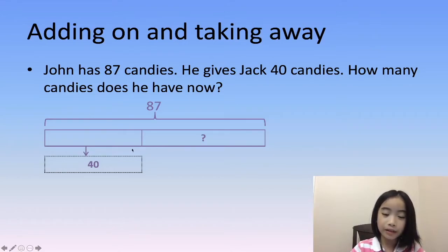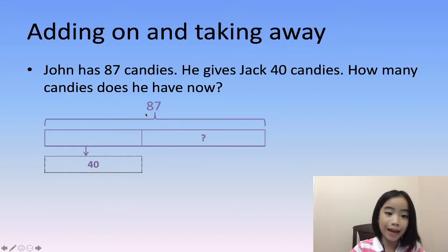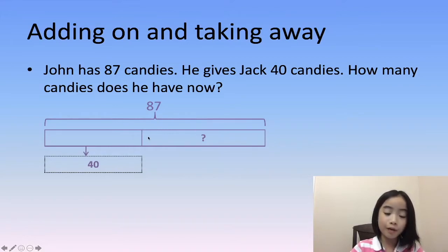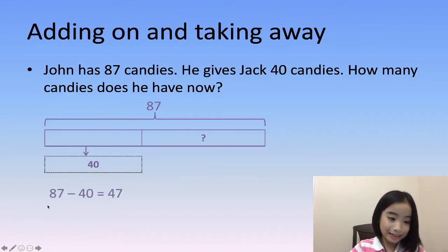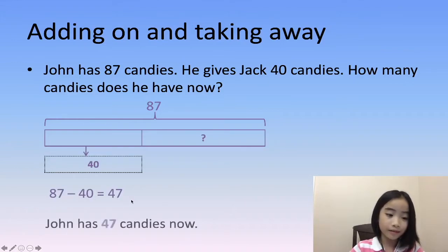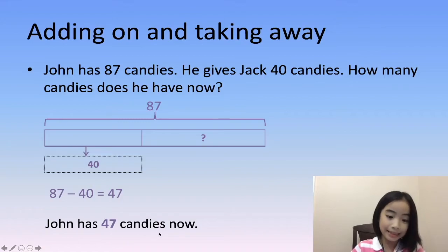From here we know that we're taking 40 away from 87, so this is a subtraction problem. 87 minus 40 equals 47. John has 47 candies now.